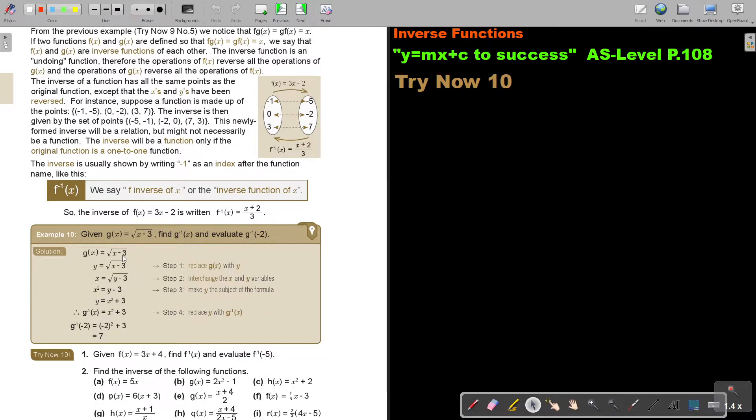And then, you will do it like this. So, first, very important, in the place of the G of X, you put a Y. Then, you swap. Step one, replace this with a Y. Step two, you interchange all the X and Y. So, where you see a Y, it becomes an X, and where you see an X, it becomes a Y. And now, you make Y the subject of the formula. It's squared, and I take it over. Basically, I make Y the subject of the formula, and then G minus 1 of X is X squared plus 3.